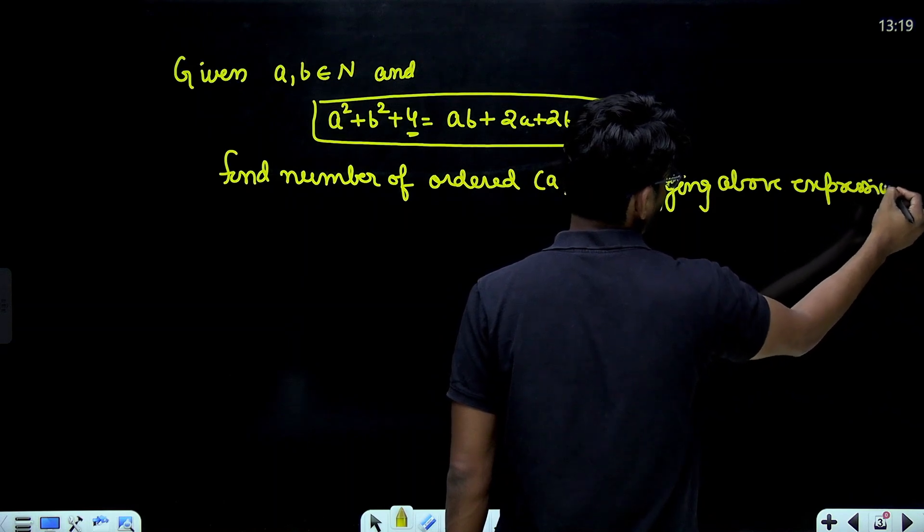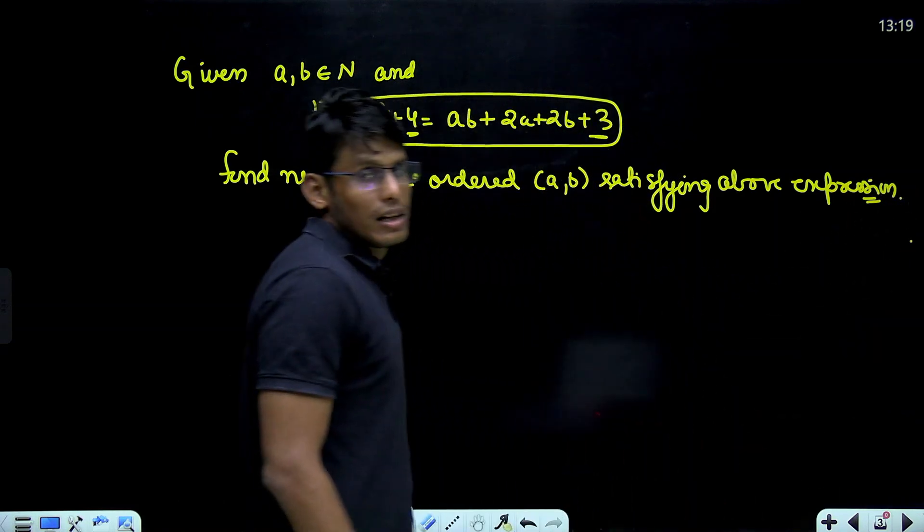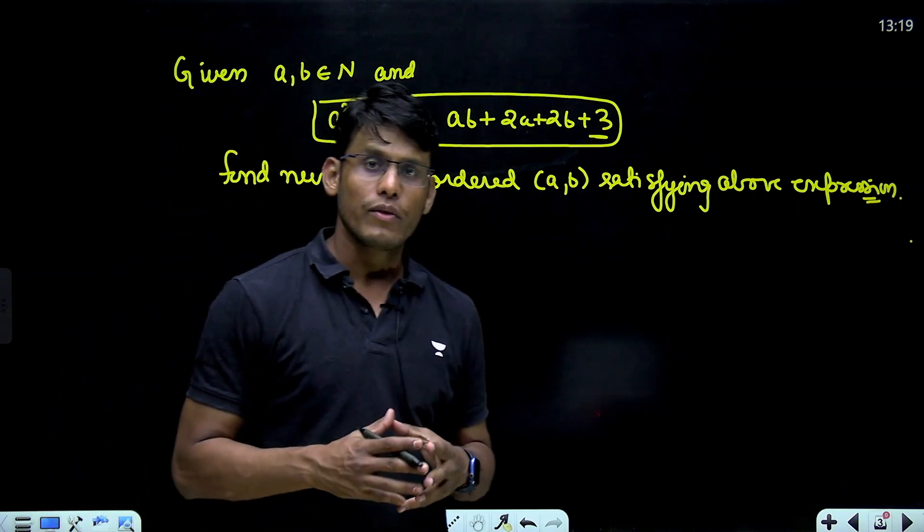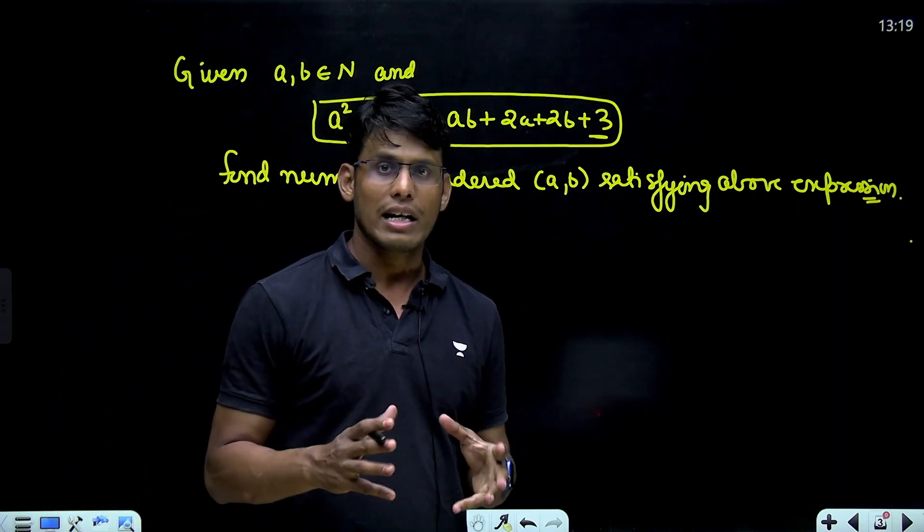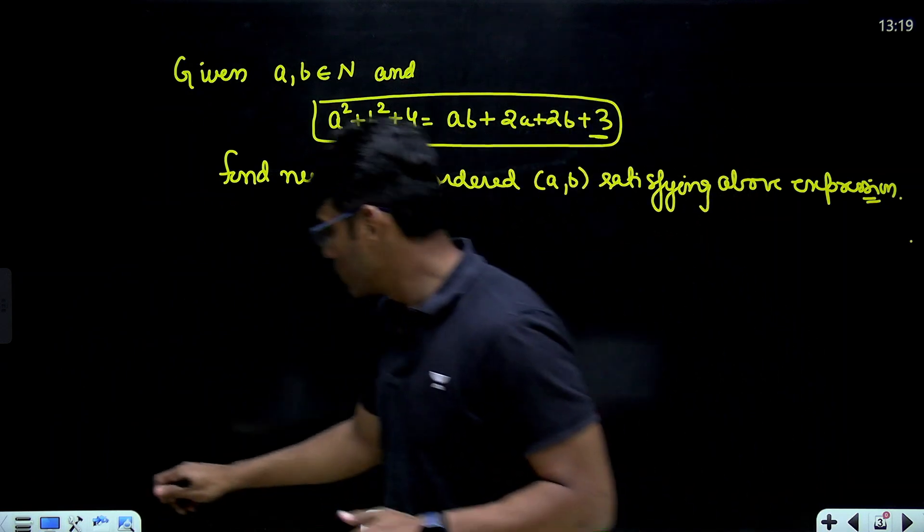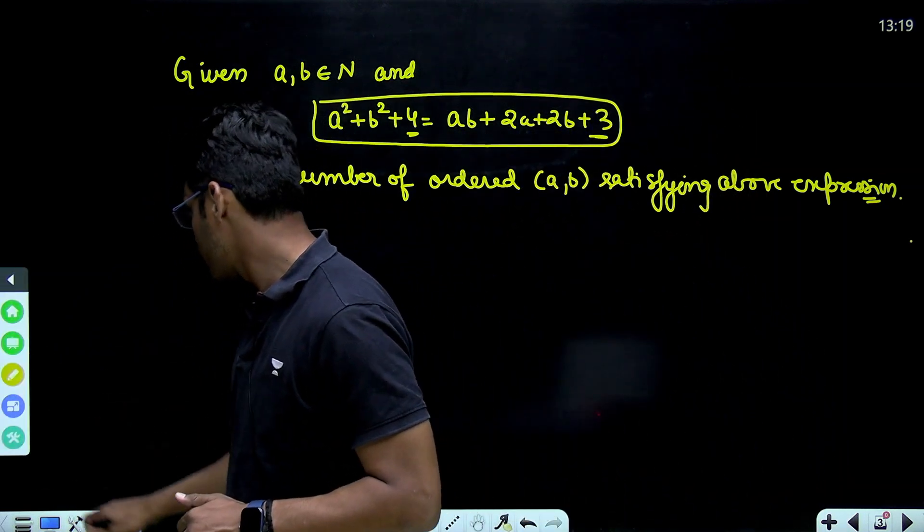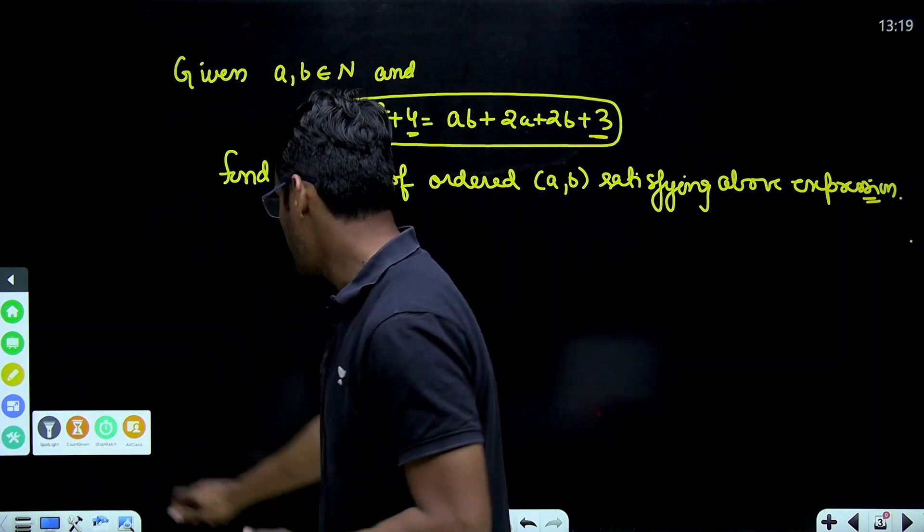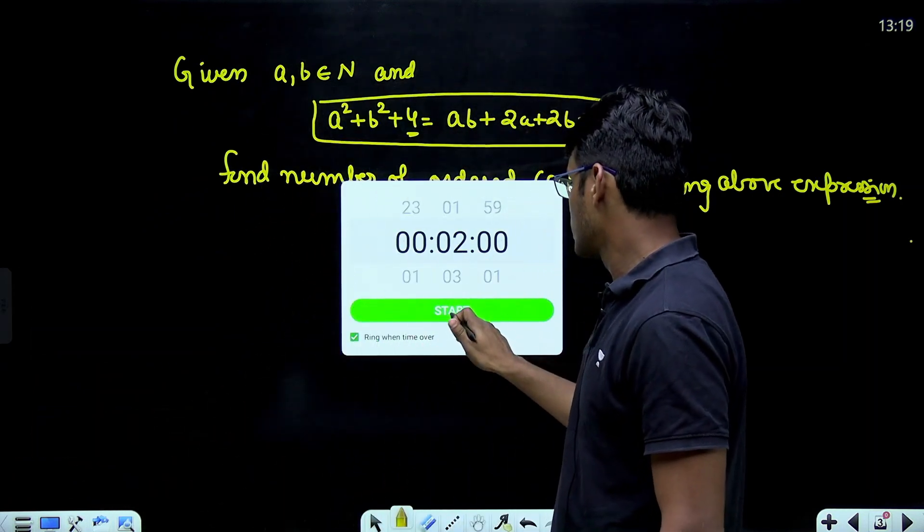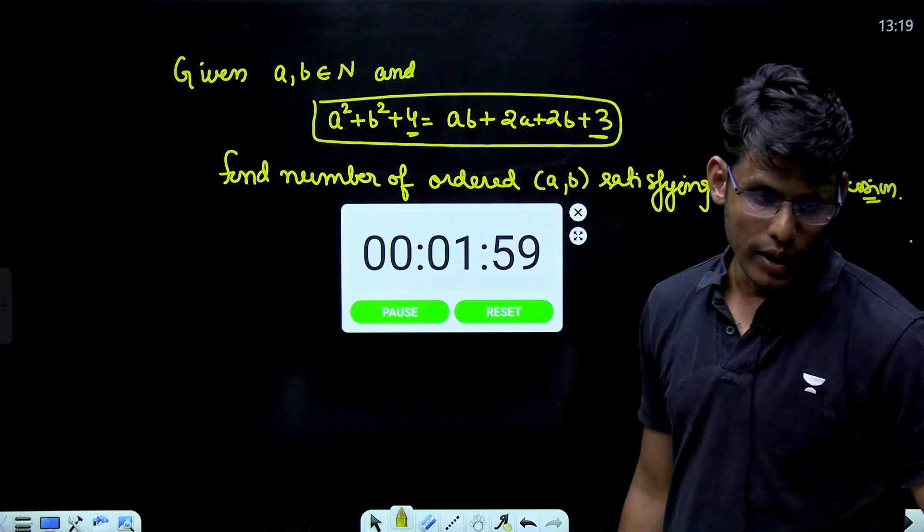Find number of ordered A comma B satisfying above expression. This is the problem which needs to be solved. I am going to give you 2 minute head start and then we will see the formal solution of this. Let me give you 2 minute of head start. Do it now.